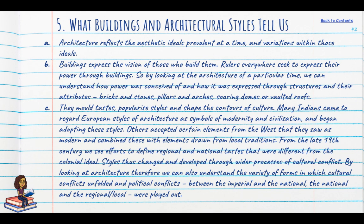What do buildings and architectural styles actually tell us? Architecture reflects the aesthetic ideas prevalent at the time. Buildings express the vision of the people who built them — rulers everywhere seek to express their power through buildings. By looking at architecture, we can understand how power was conceived and expressed. These styles moulded tastes, popularised forms and shaped culture. Many Indians came to regard European architectural styles as symbols of modernity and began to adopt them. From the late 19th century, efforts emerged to define regional and national tastes different from colonial ideals, and styles kept changing through wider processes of cultural conflict — architecture thus reveals how political conflicts between the imperial, national and the regional were played out.